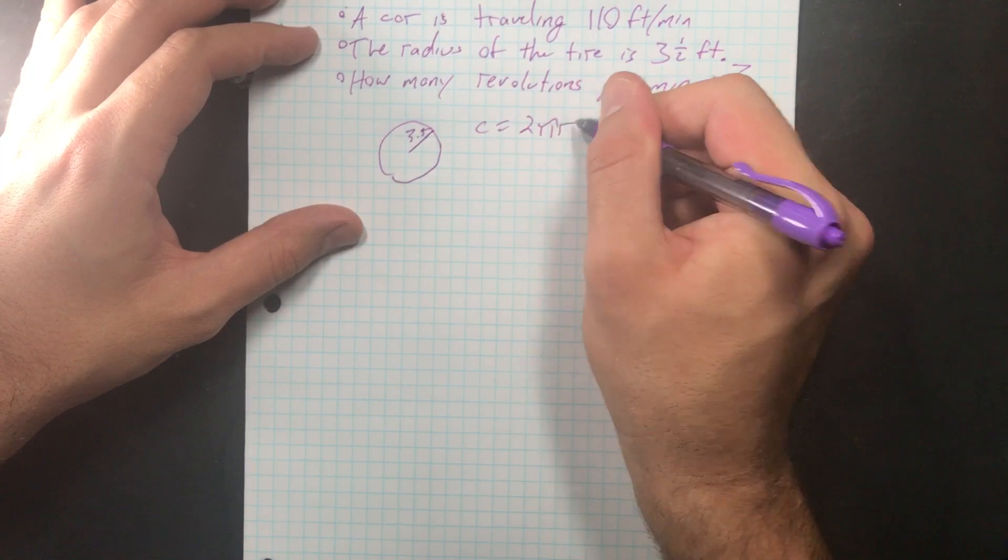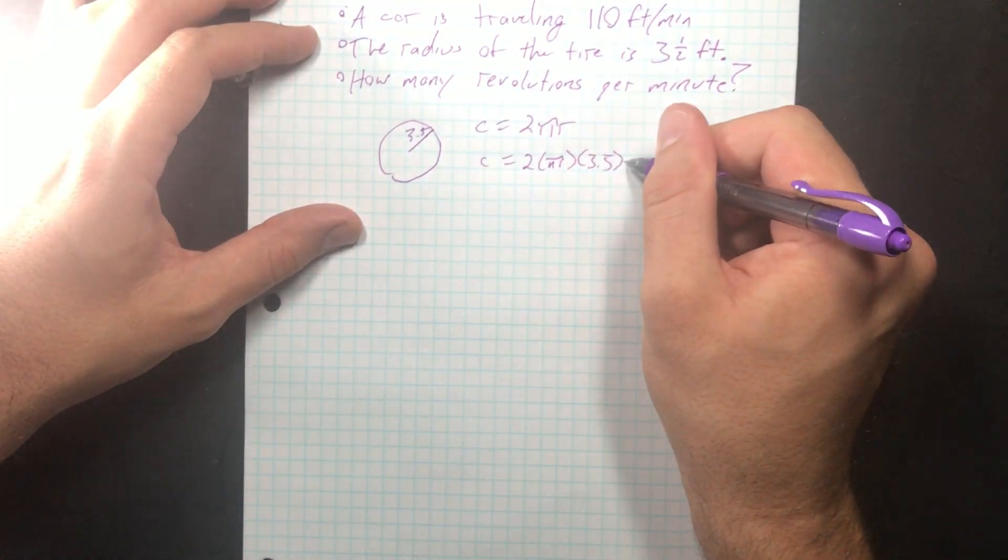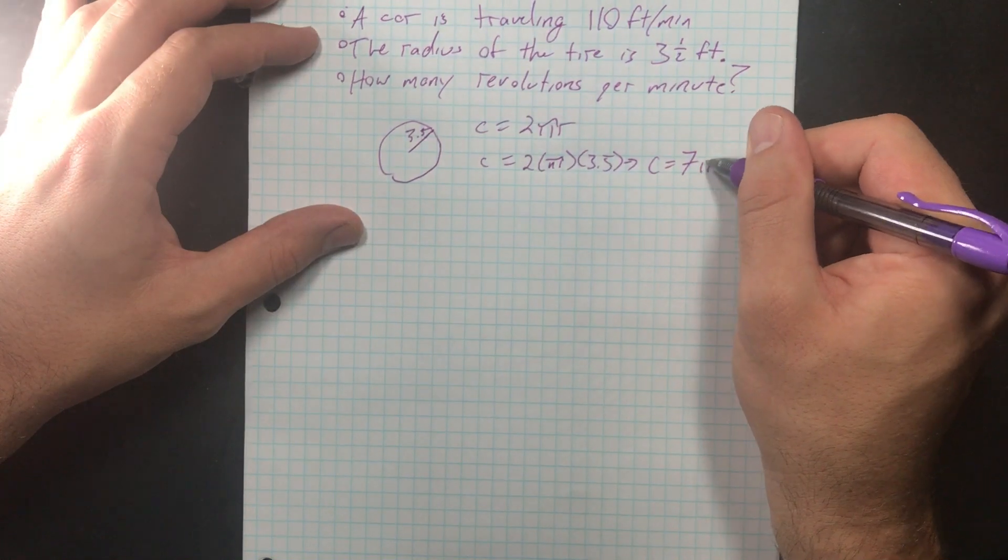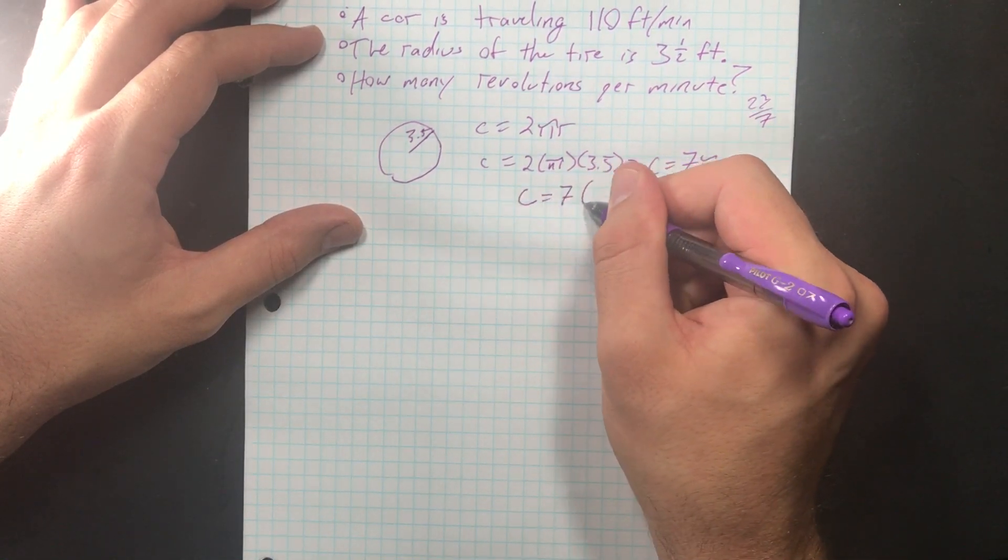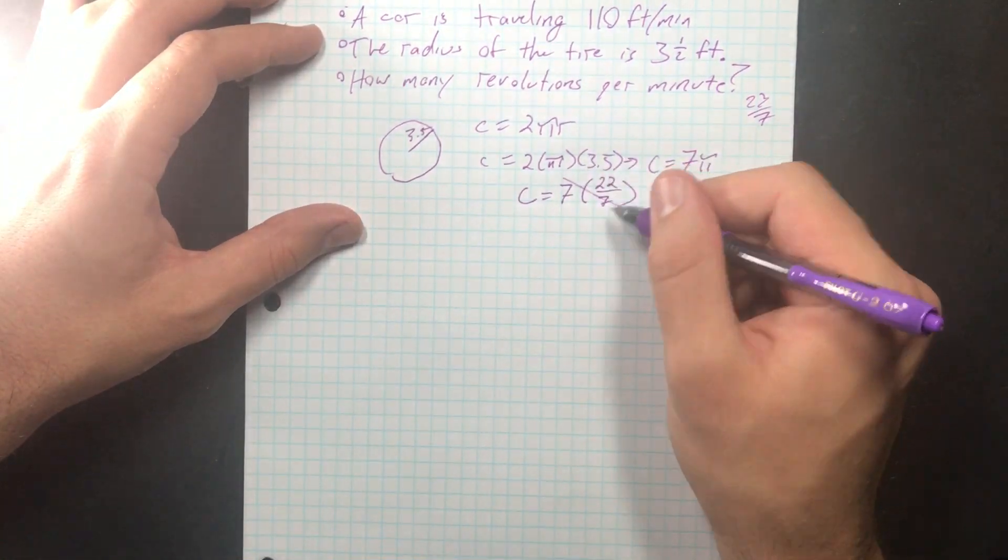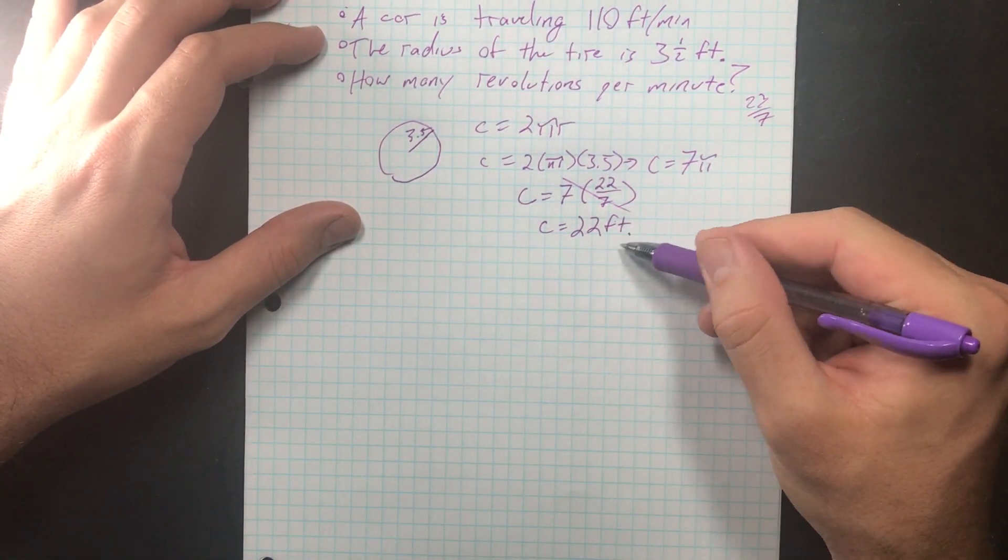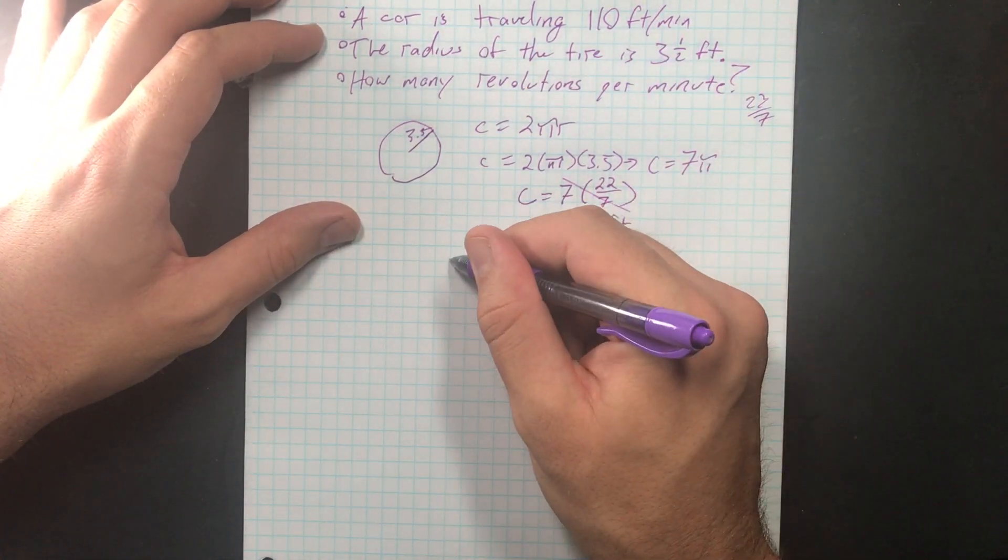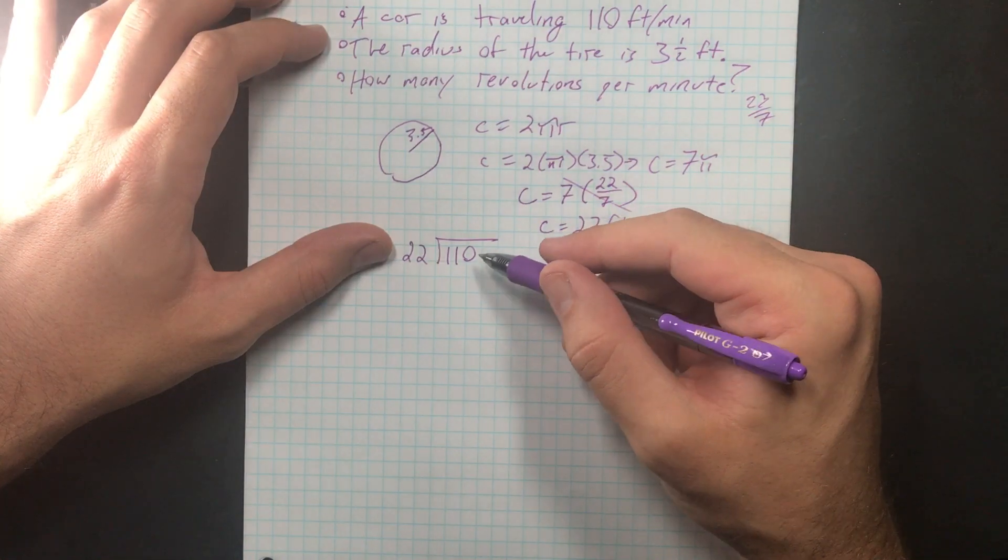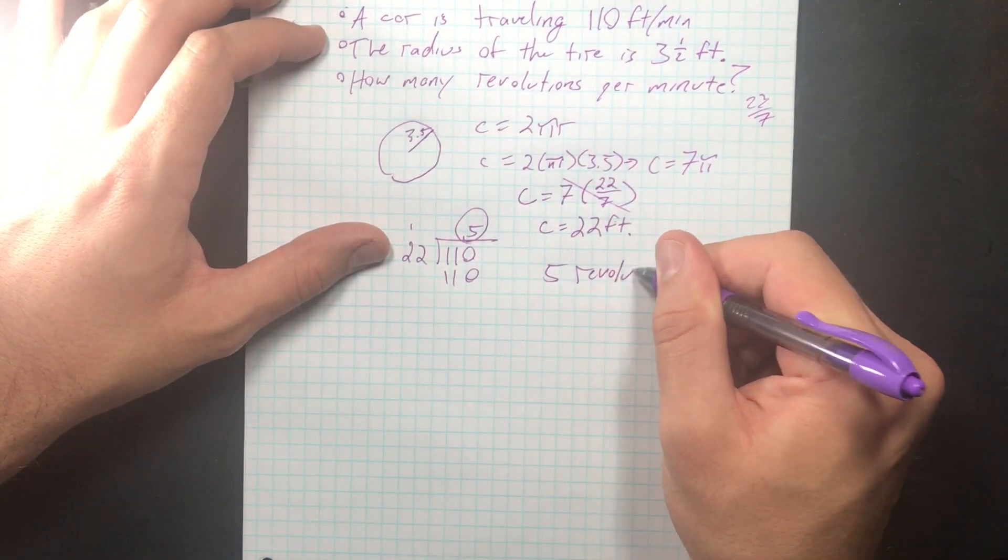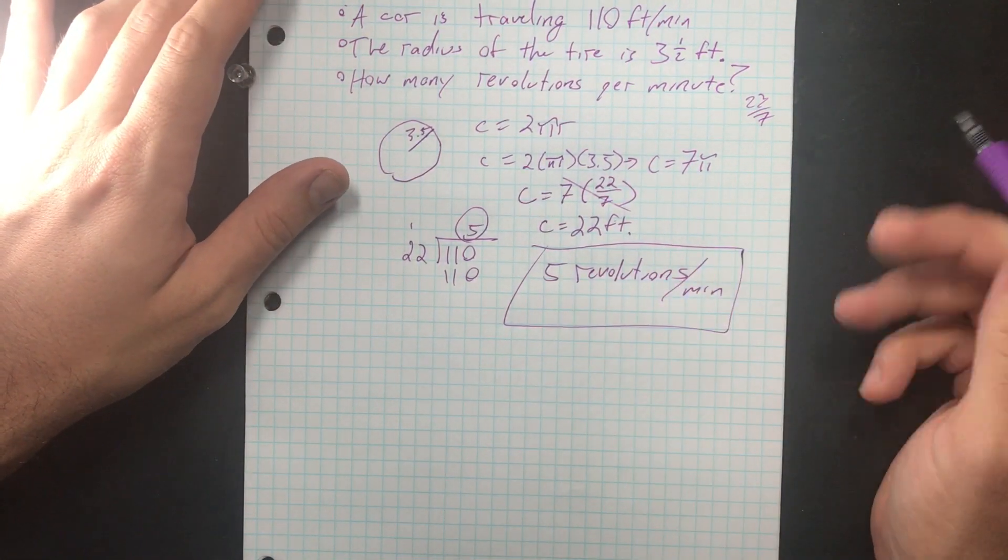The circumference is 2πr. The circumference will be 2 times π times 3.5, that's going to equal 7π. And we're going to use that 22 over 7 figure for π. So the circumference is going to be 7 times 22 over 7, and those 7s cross out. So the circumference is 22 feet. This is a big tire. So how many times does this tire need to rotate to cover that 110 feet? Well, we know that it needs to go 110 feet, and how many times does that 22 fit into it? Five revolutions per minute. That's our answer.